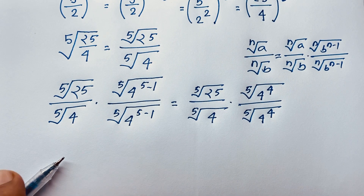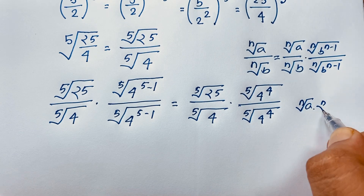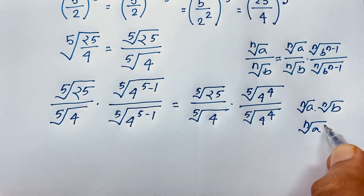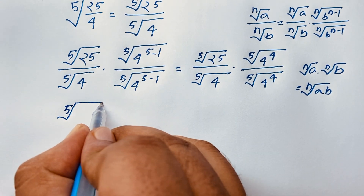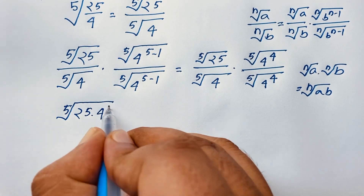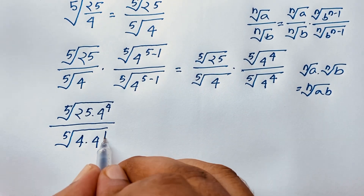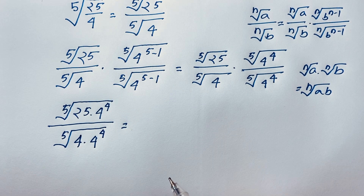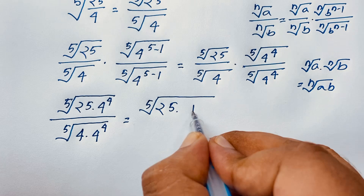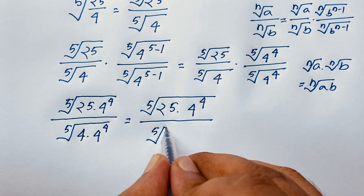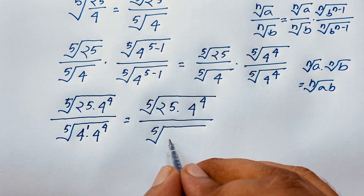Now at this moment, 4 to the power n minus 1 means the denominator below is the same. We know that n-th root of a times n-th root of v equals n-th root of av. So if I apply this formula, this expression becomes 5th root of 25 times 4 to the power 4, over 5th root of 4 times 4 to the power 4. Since the exponent on 4 is 1, adding 1 plus 4 gives 5, so it will be 4 to the power 5.